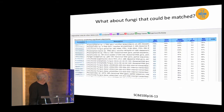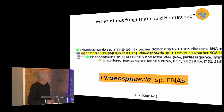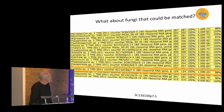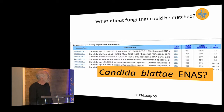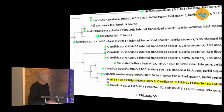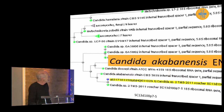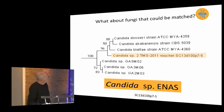Here's another one: Phaeospheria. If you do the BLAST you get Phaeospheria; if you make the tree you get Phaeospheria. I think Phaeospheria species in ENAS is probably safe. Here's a Candida — Candida Blatii is the closest one. But if you make a tree, the closest one is Candida acabanensis. And if you make your own tree by pulling sequences from GenBank, aligning in MUSCLE and running in MEGA, you can see it's actually basal to a clade containing named species — equally distant from any of them. So probably just Candida species is the way to go.